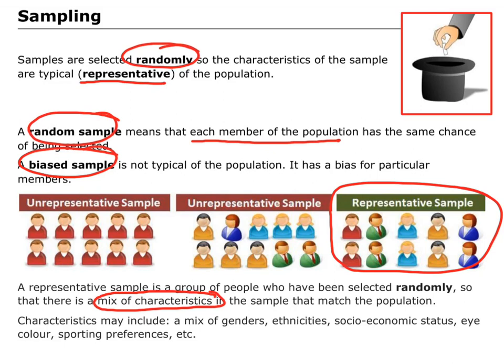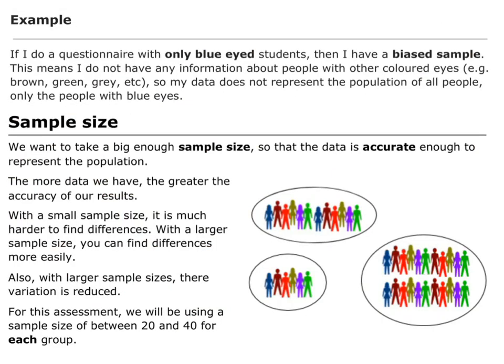If I take a biased sample, I'll get an unrepresentative sample. An unrepresentative sample is where I might just choose the couple of people sitting nearby to me — maybe they're my friends and have a very similar opinion to me, so I'm not getting a representative mixture of opinions; I'm getting a biased mixture. In a biased sample, not everyone has the same chance of being chosen. For example, if I do a questionnaire with only blue-eyed students, that is a biased sample — I have no information about people with any other eye colour, so my data isn't representative of all people in my population.